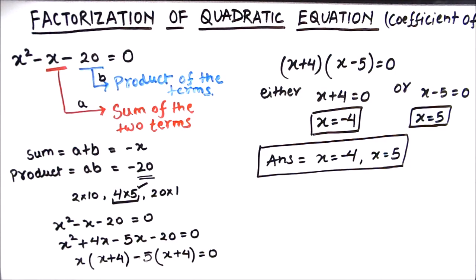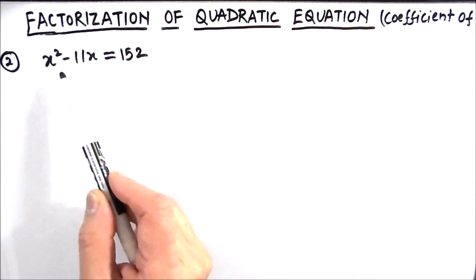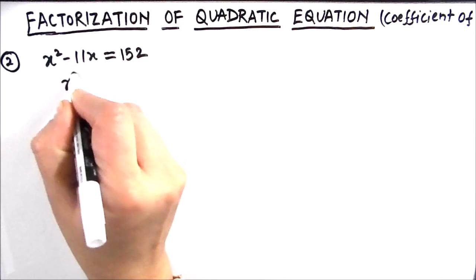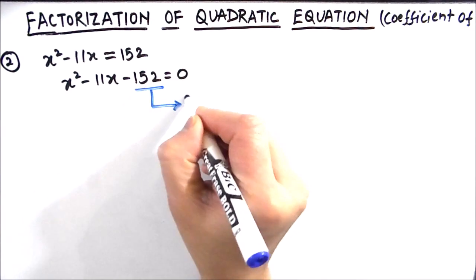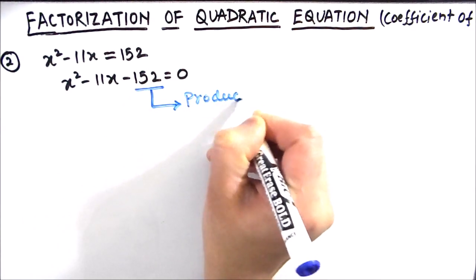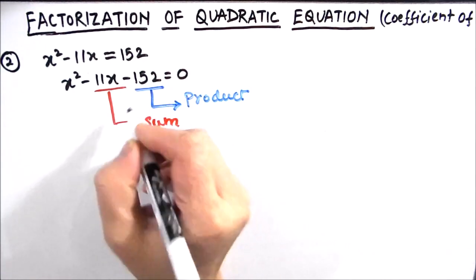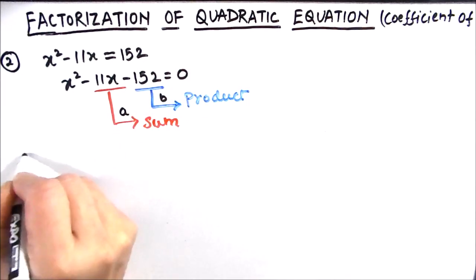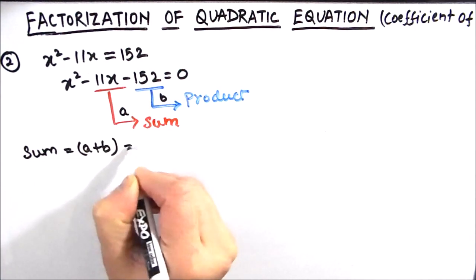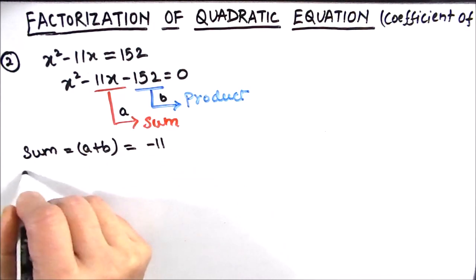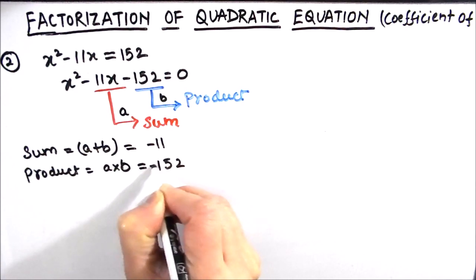Let us now solve our second example. Our second example is x squared minus 11x is equal to 152. Sometimes our equation is given in this form; we can change it to x squared minus 11x minus 152 is equal to 0. In this equation, 152 will be the product of the two numbers, and the sum of the two numbers should be negative 11. Let's call the two numbers a and b, so a plus b equals negative 11 and a times b equals negative 152.